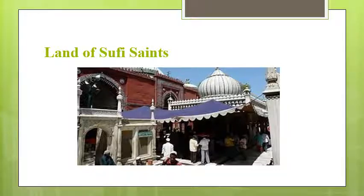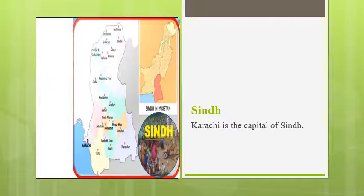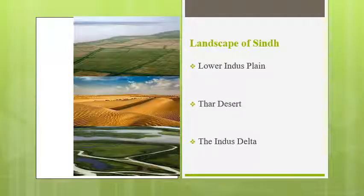Now we will discuss the province of Sindh. The provincial capital of Sindh is Karachi — the largest city and port of Pakistan. Sindhi is the main language spoken in this province. The landscape of Sindh consists of the lower Indus plain, the Thar Desert, and the Indus Delta. The Indus Delta, to the south of Karachi, flows into the Arabian Sea. The coastline, with sandy beaches, little bays, and inlets, is a popular place for relaxing.